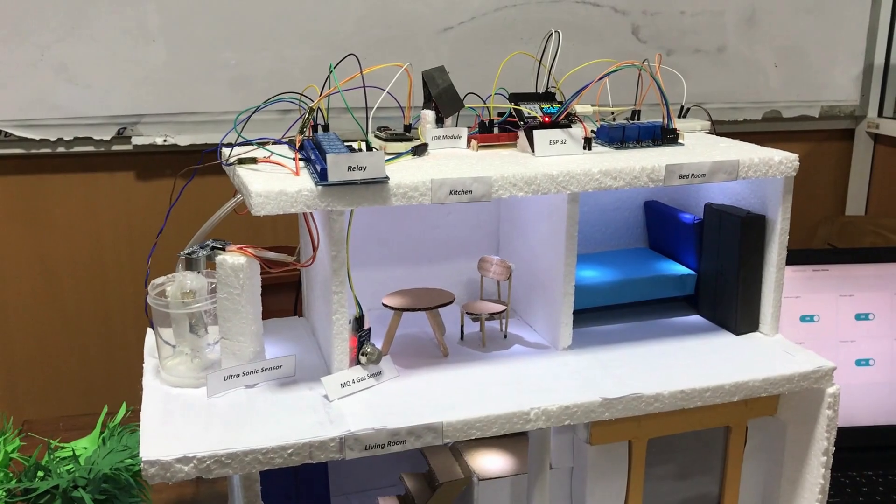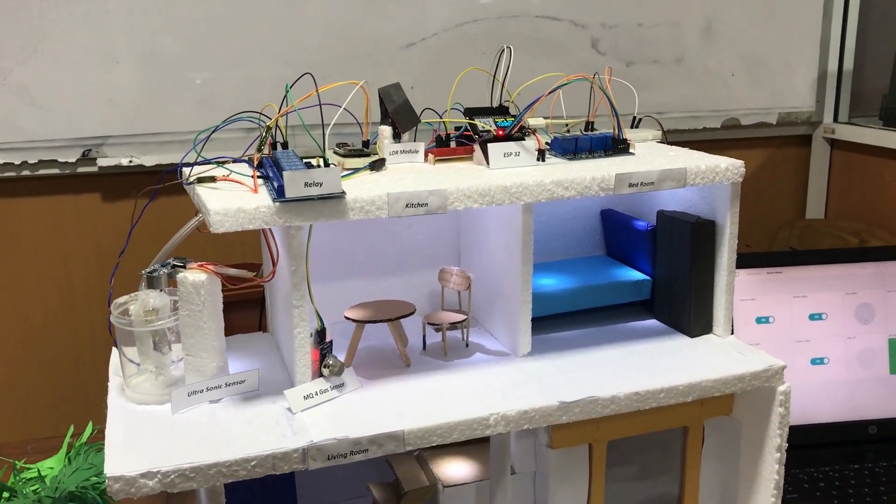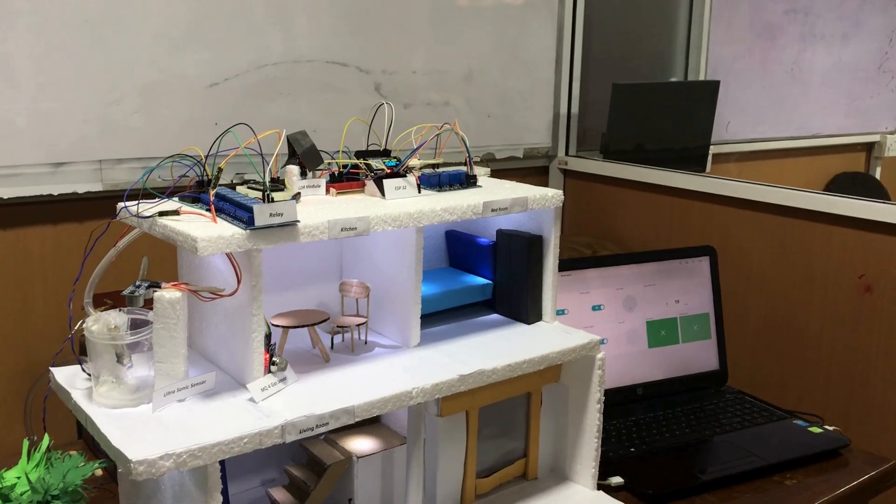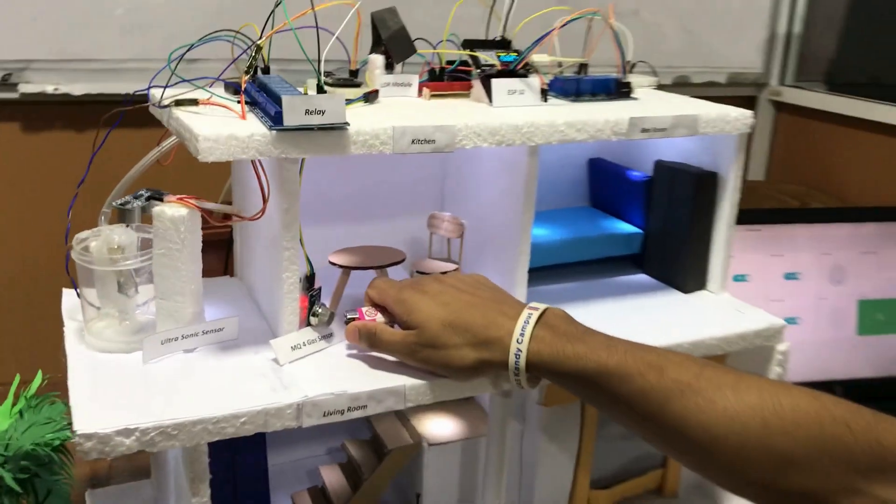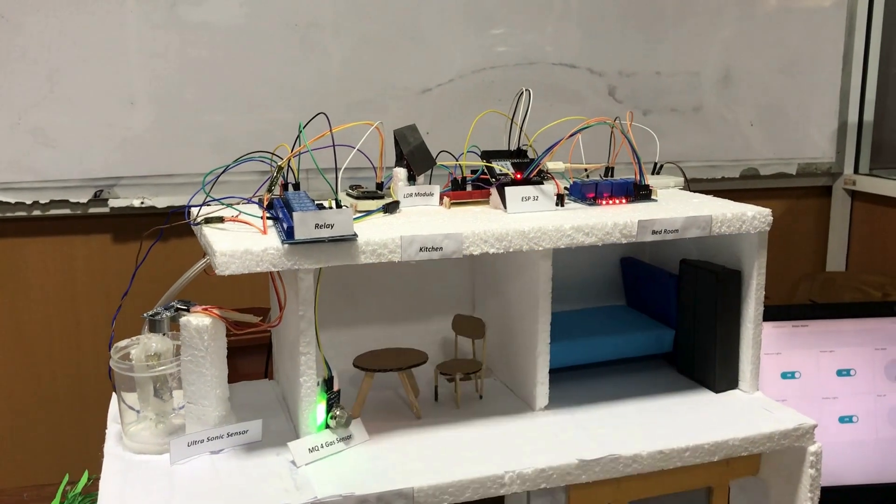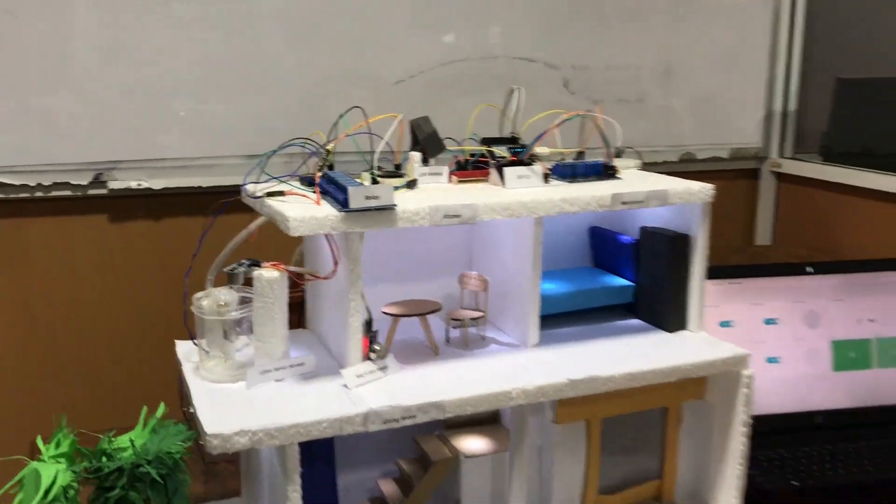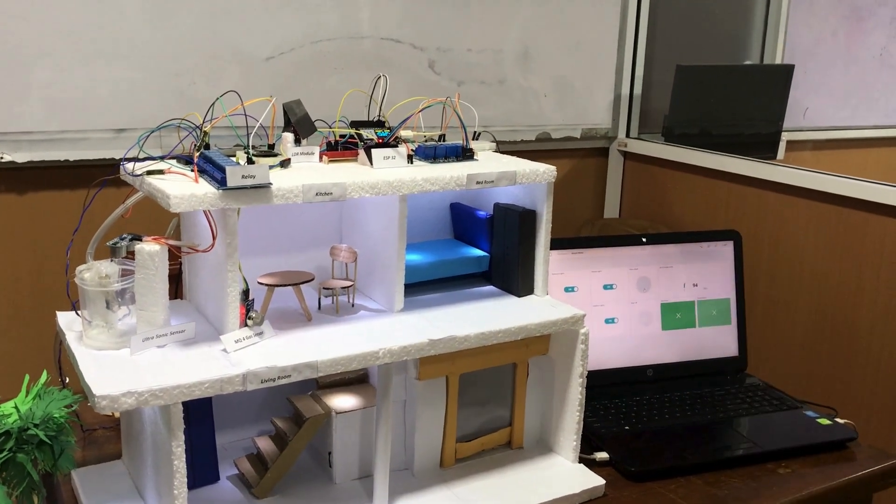This is my third system. Here I have used an MQ4 gas sensor in the kitchen. When there's any gas leakage present here, I will demonstrate. It will automatically turn on and off to alert you that there is a gas leakage. You can also see the notifications on your mobile phone as well.